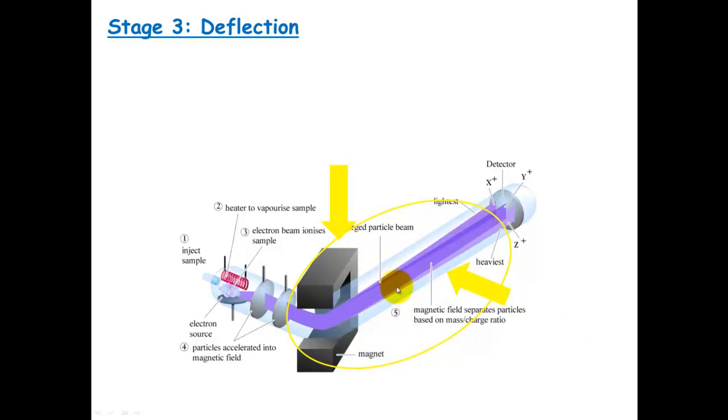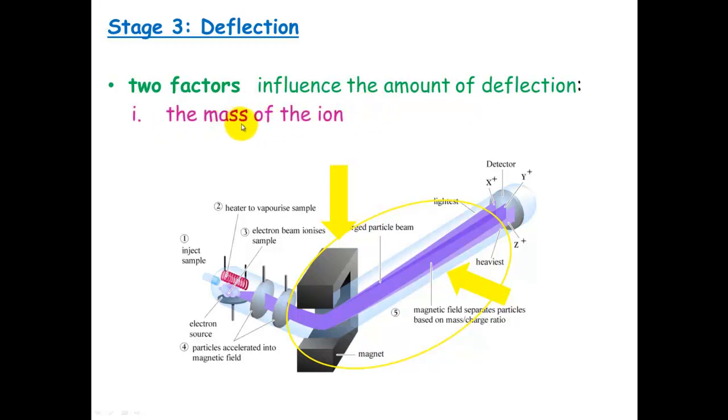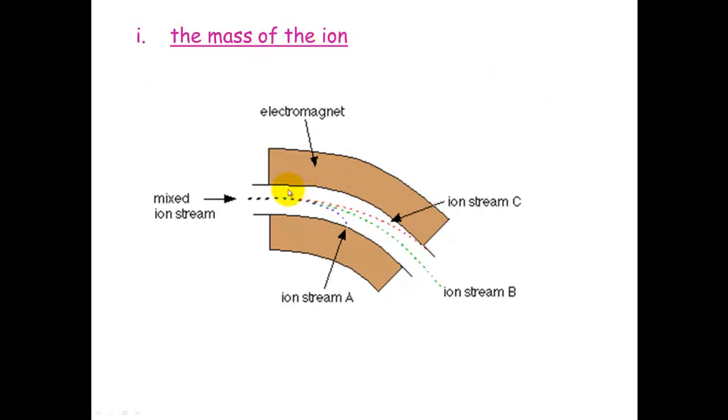And this is going to cause deflection of the ions. And there's two major factors that influence the amount of deflection. One we've already discussed, which is the mass of the ion. And the second one is the charge of the ion. If the charge is greater, it's going to deflect more or attract more because it's got a higher charge.